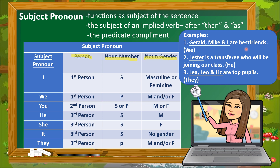Example two: 'Lester is a transferee who will be joining our class.' Lester is a boy, so noun gender is masculine. Lester is only one, so it is singular. Singular, masculine, third person — we use 'he.' If we change Lester to Leia, who is a girl, we use 'she' instead: 'She is a transferee who will be joining our class.'